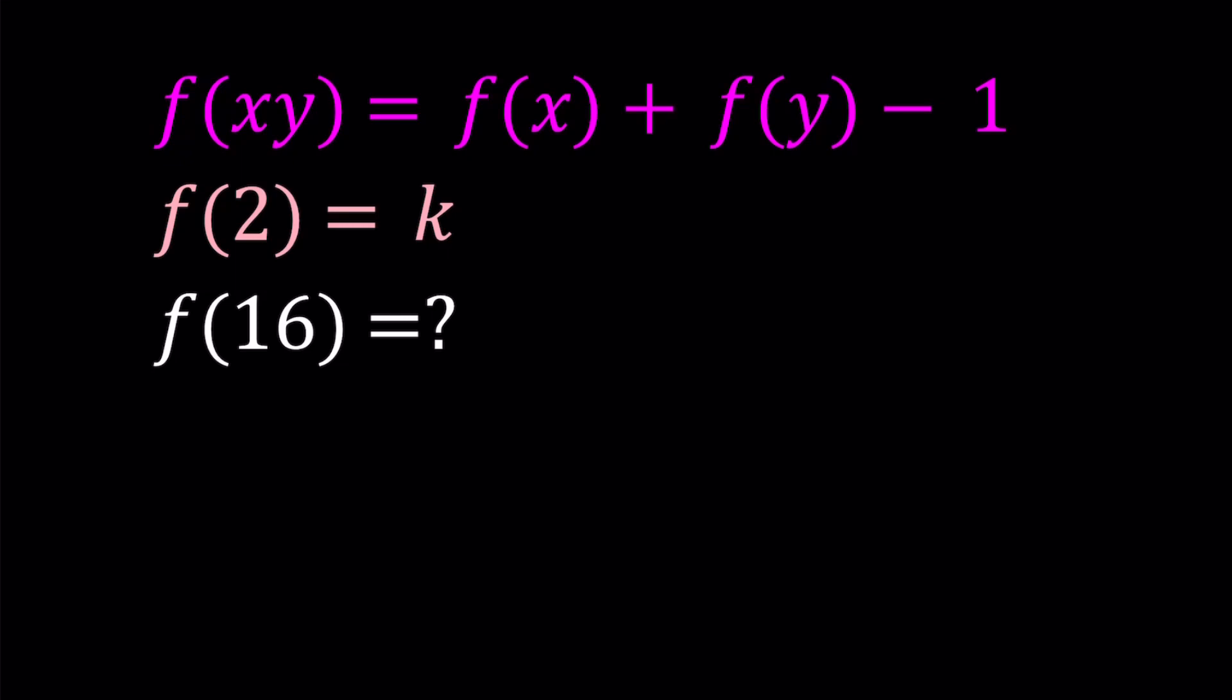Anyways, we have f of xy equals f of x plus f of y minus 1, and we're given that f of 2 equals k, where k is a constant, a real number. And we're supposed to evaluate f of 16, of course, in terms of k. Great. So let's go ahead and see how we can find it.